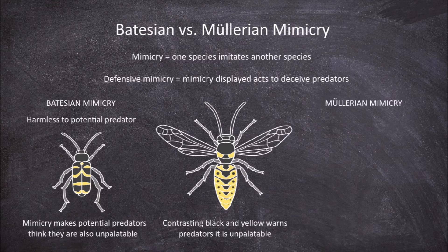Mullerian mimicry, on the other hand, is where the species is harmful itself and mutually mimics with another harmful species.